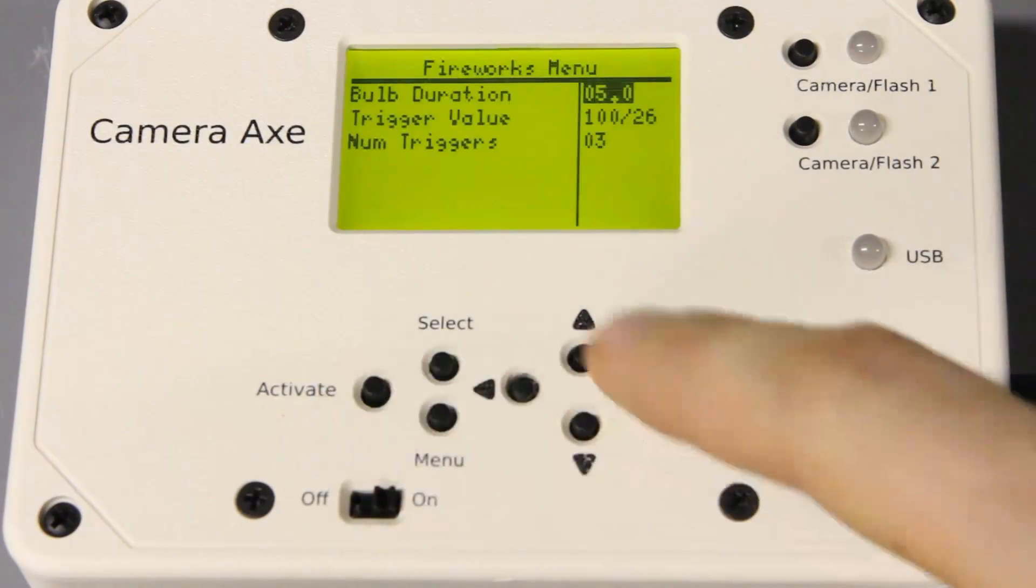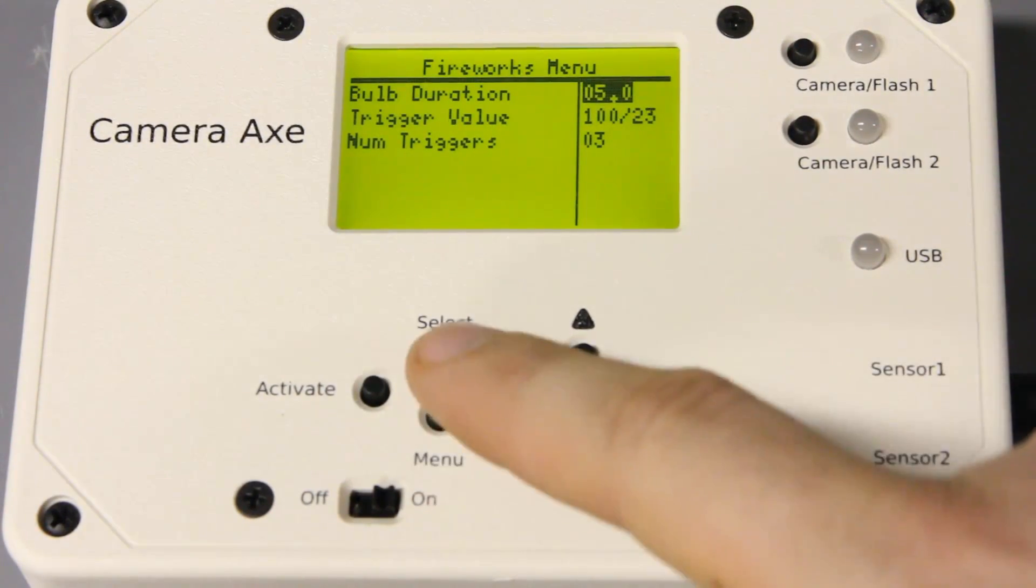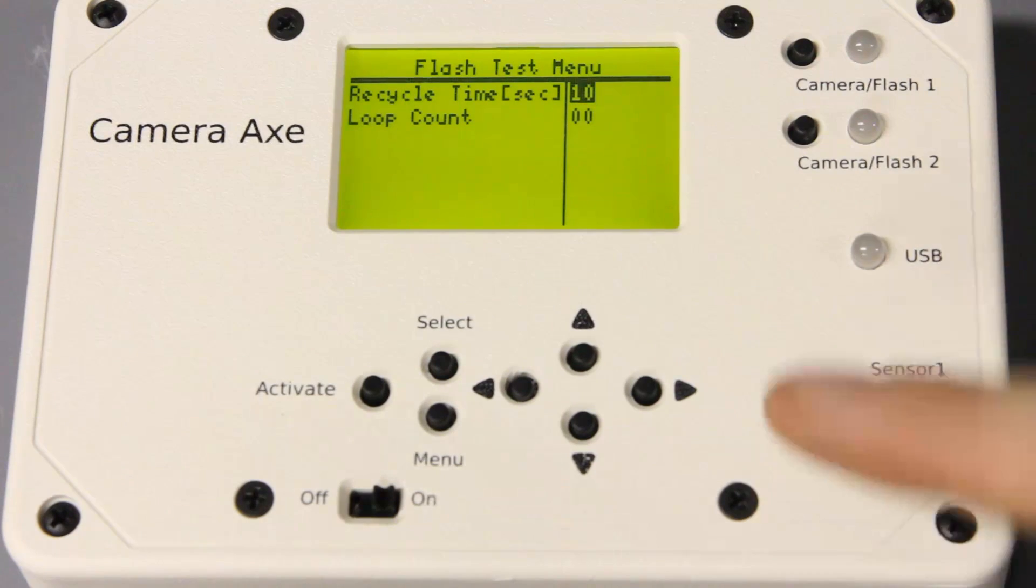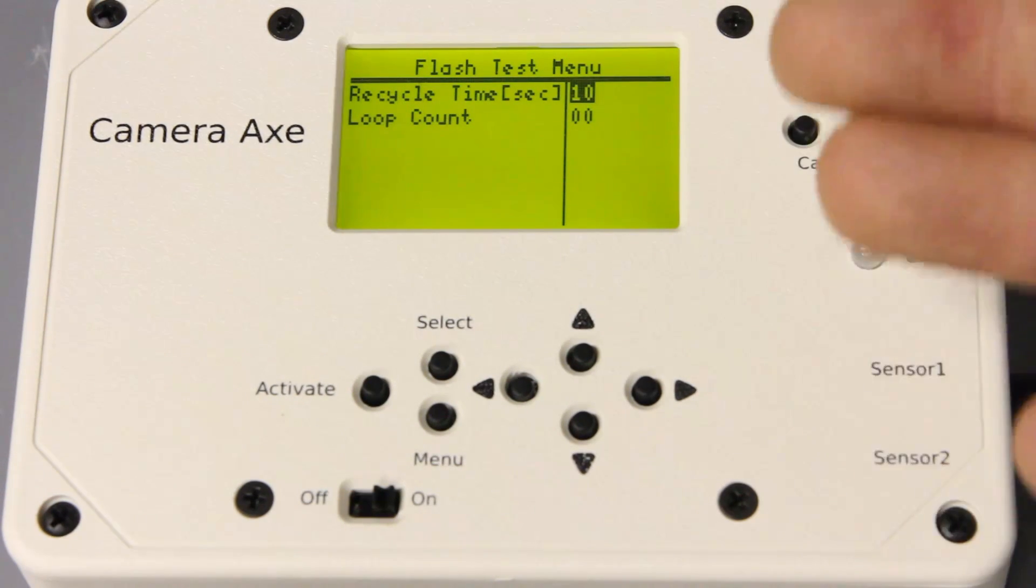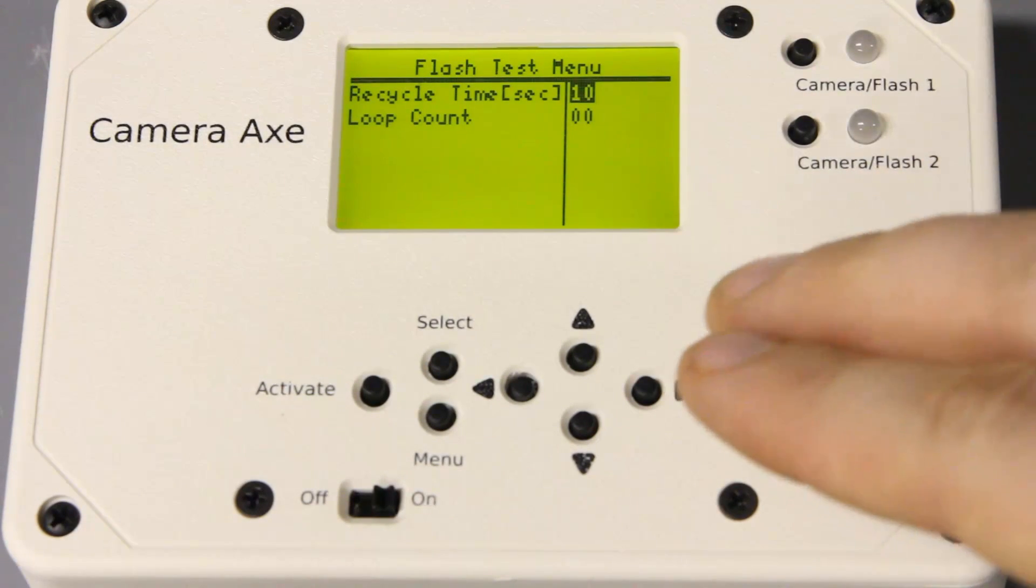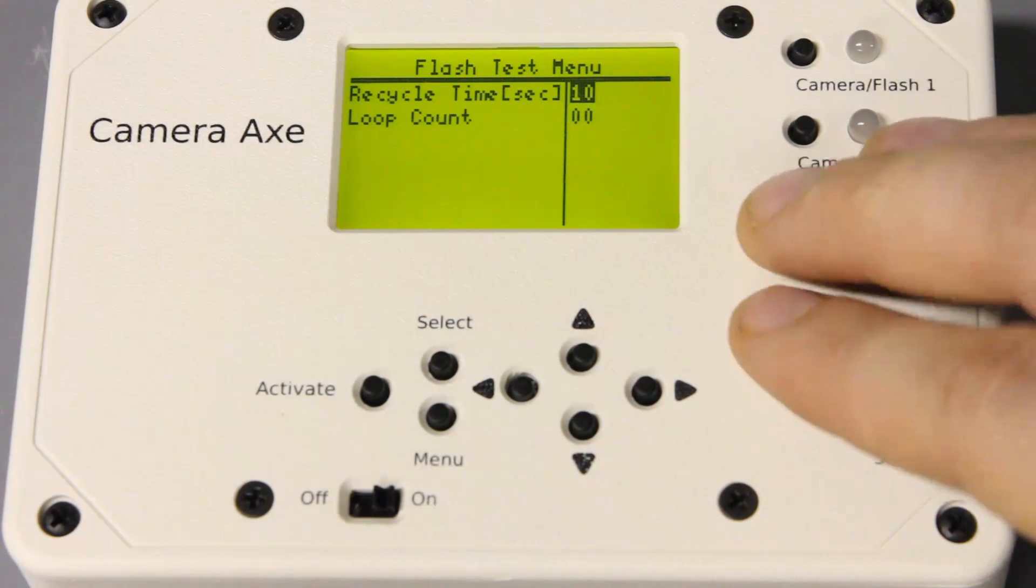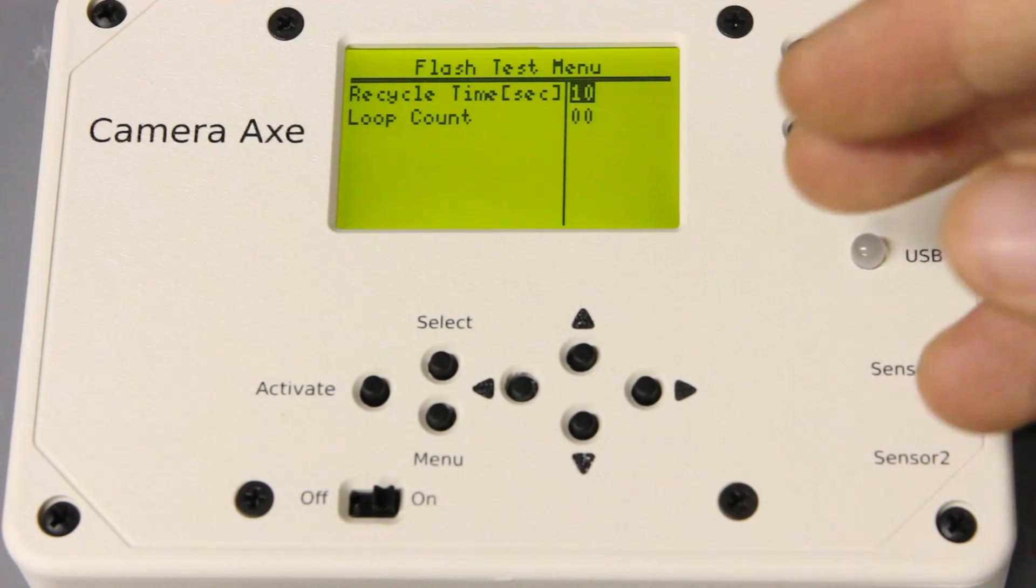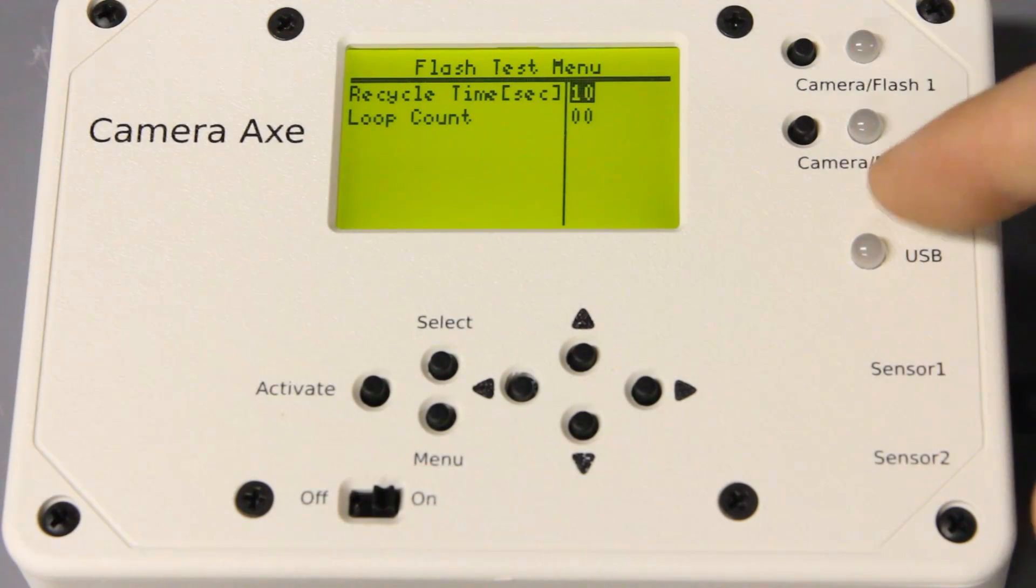And then the last one that I want to show you guys is this flash test menu. Now, I haven't tested this at all yet. I plan to do a whole separate video on this because it's really interesting. But this menu was developed by Ricky and Dave, and I just wanted to put it out there because it's pretty cool. The idea is that it will allow you to measure the camera and flash lags and durations. This is something I've done on other episodes with an oscilloscope. But if you could do this with the light sensor and the camera axe, that would be really cool.